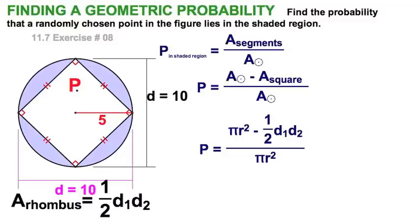that its two diagonals are, of course, both 10. Pi r squared minus one half of the product of the diagonals over pi r squared.